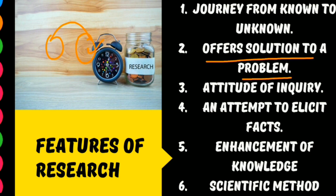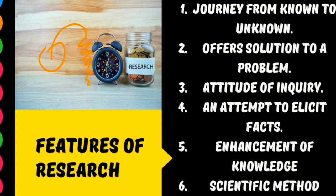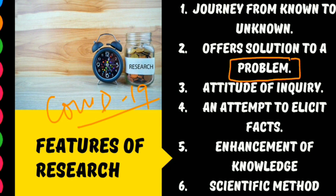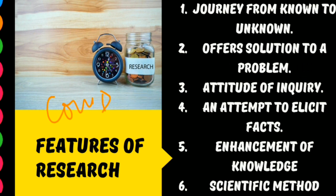The second feature is 'offer solution to a problem.' We do research because existing knowledge has created a problem before us, and to find the solution to that problem we do research. For example, in the case of COVID-19, we know its symptoms but we don't know its medicine — that is a problem for us. So to find the solution, our scientists are making a vaccine. Once the vaccine is ready, it means research was done on that problem and through that research a solution was found.